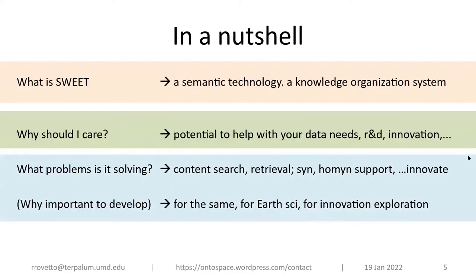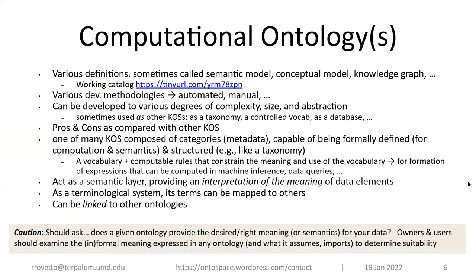In a nutshell, SWEET is a semantic technology and a knowledge organization system. Why should you care? It can potentially help with your data needs — that's been a topic of a number of sessions and semantic technology research. What problems can it solve? Why is it important to develop? For things like content search and retrieval, and also to innovate.